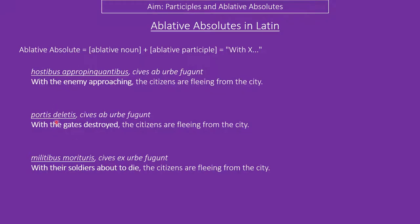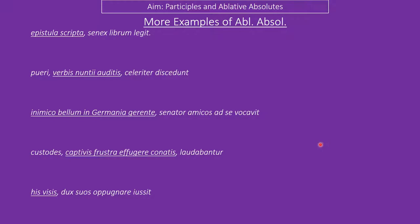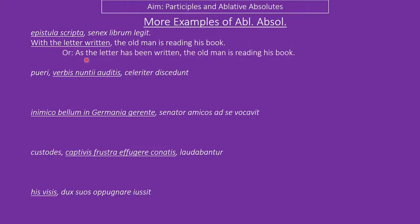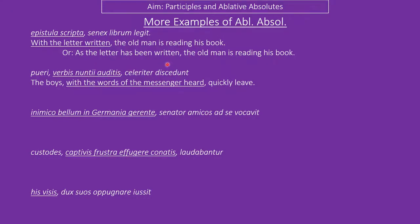Notice we've used present participles, perfect passive participles, and future participles — you could also have perfect active participles. Here are some examples. 'With the letter written, the old man reads from his book' — or better: 'as the letter had been written, the old man is reading his book.' The boys — with the words of the messenger heard, quickly leave. We could improve this to 'after the words of the messenger had been heard.' With his rival waging war in Germany, the senator called his friends to him — or 'whilst his rival was waging war in Germany.'